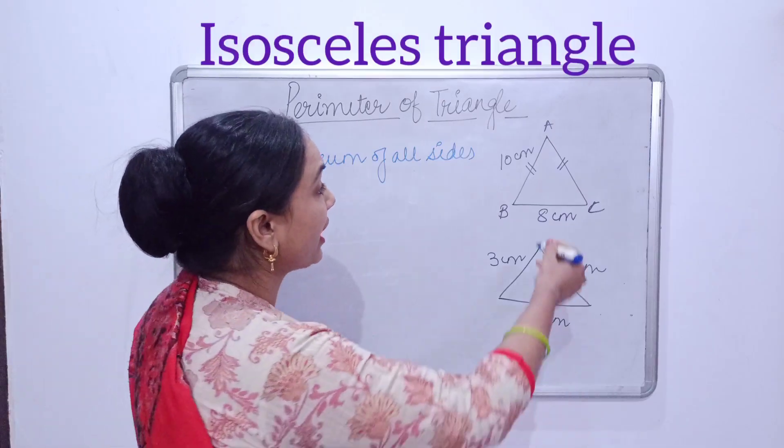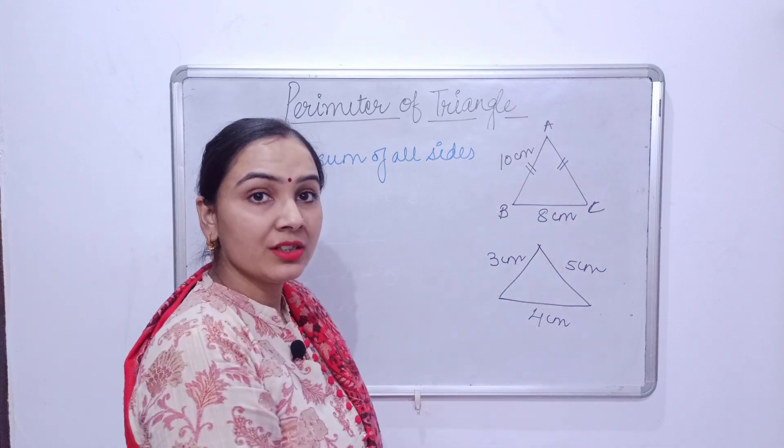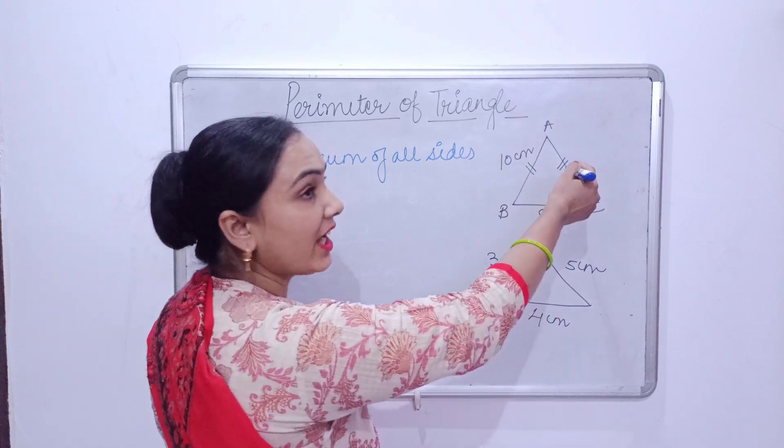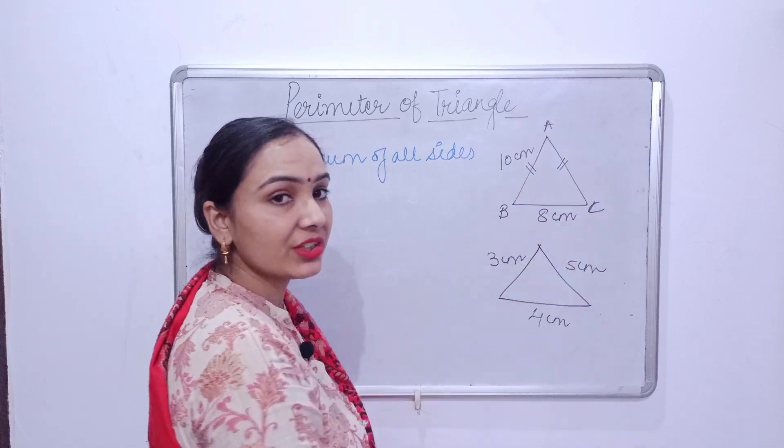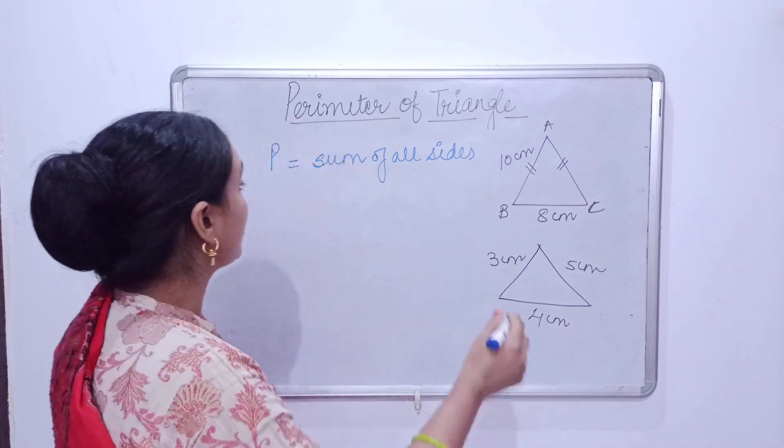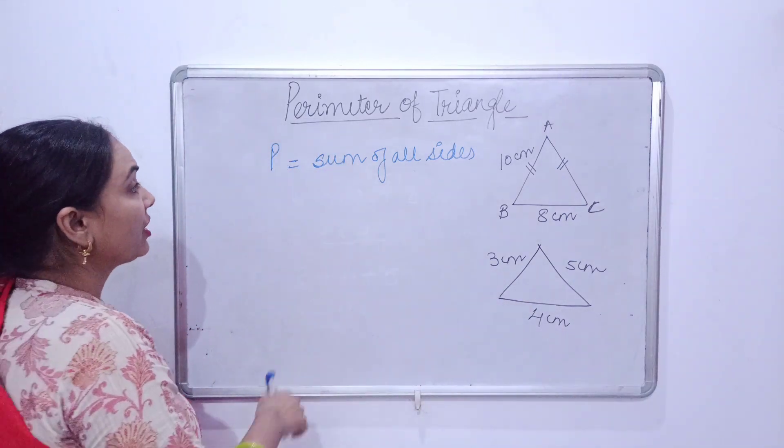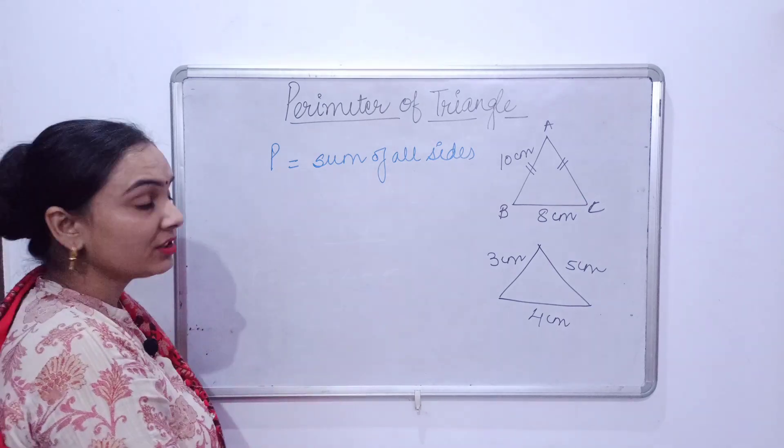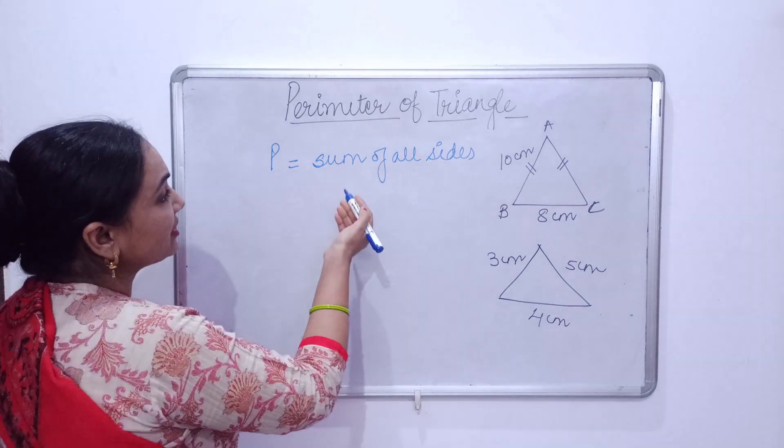Now let's find out the perimeter of an isosceles triangle. Here we have an isosceles triangle having two sides as 10 centimeter and the other one is 8 centimeter.